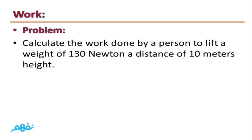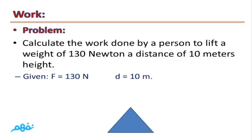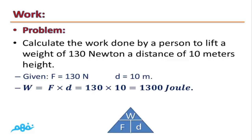Problem: Calculate the work done by a person to lift a weight of 130 newtons a distance of 10 meters height. Given: force equals 130 newtons, displacement equals 10 meters. We want to find work. Work equals force times displacement, which equals 130 times 10, equals 1300 joules.